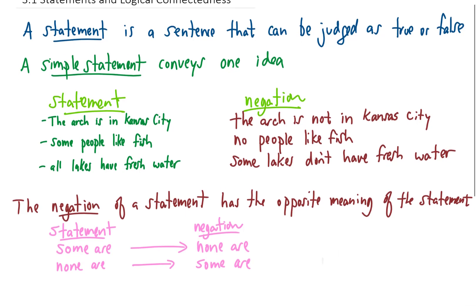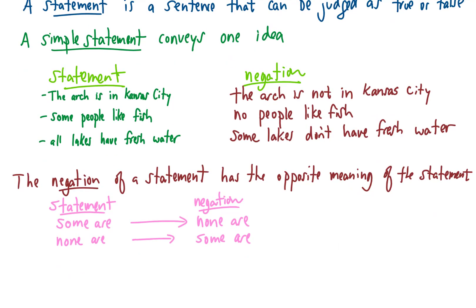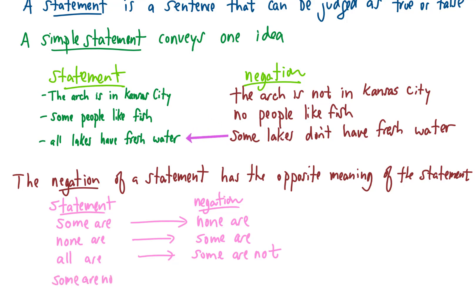Next rule: if a statement has the words 'all are', like 'all lakes have fresh water', then the negation will have the words 'some are not'. And we can reverse that — if the original statement has the words 'some are not', then the negation will have 'all are'. These two pairs of statements are each grouped together.